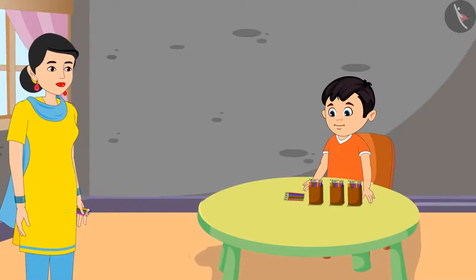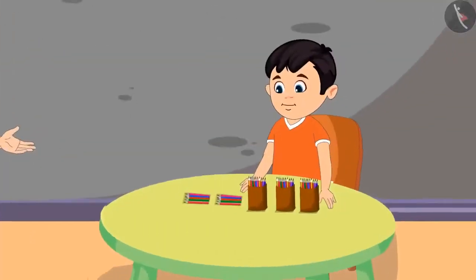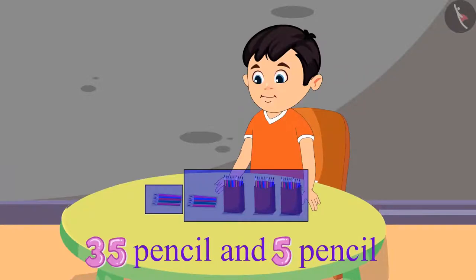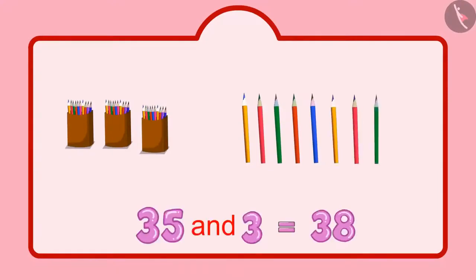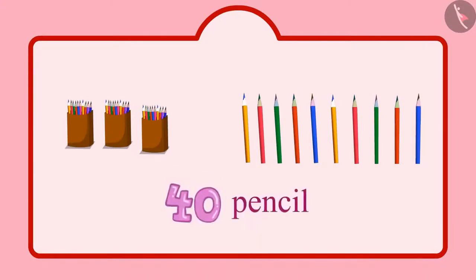After some time, Chotu's mother found some more of his pencils. 'Chotu, I have got 5 more of your pencils. Keep these together as well.' Chotu said: 'Okay mummy, I had 35 pencils and now 5 pencils more — that means 5 units more. After 35: 36, 37, 38, 39, 40. So now I have 40 pencils.'